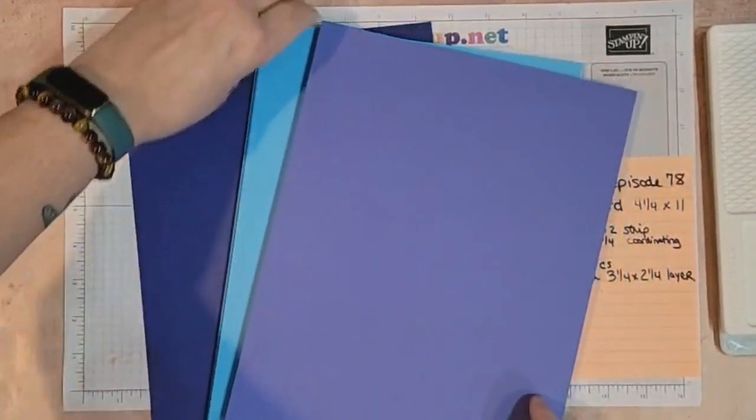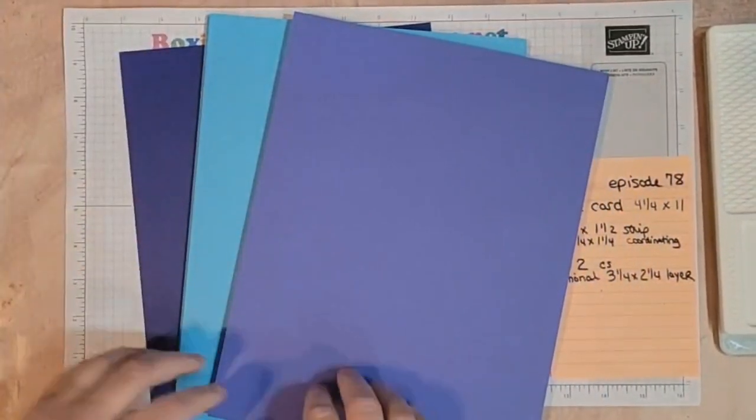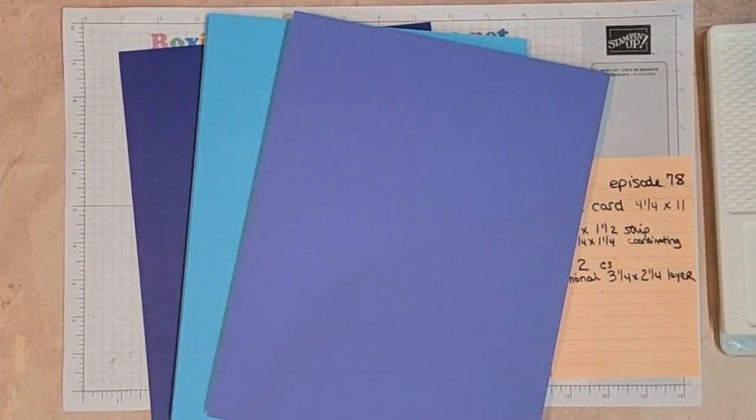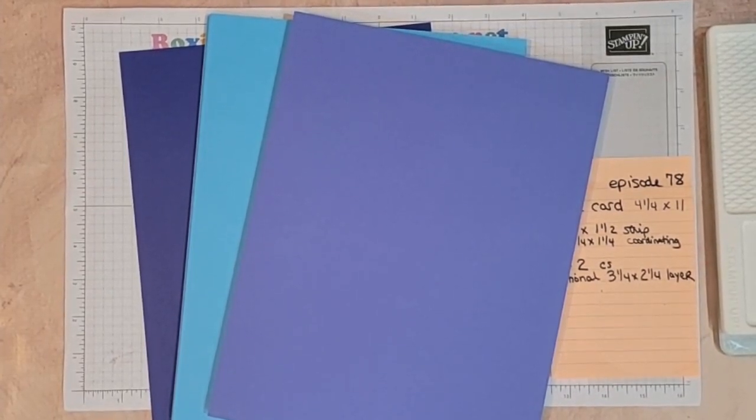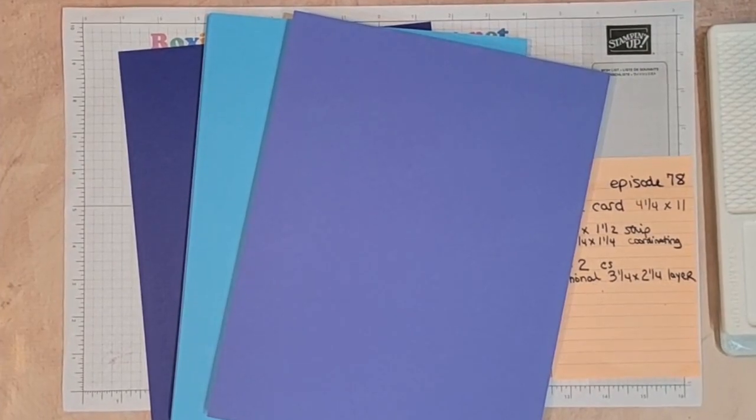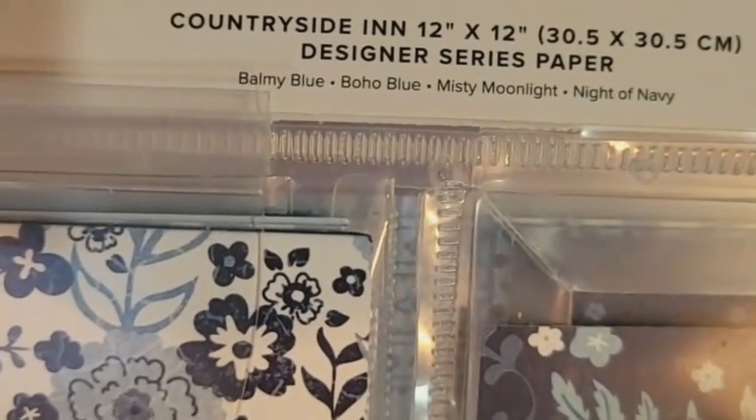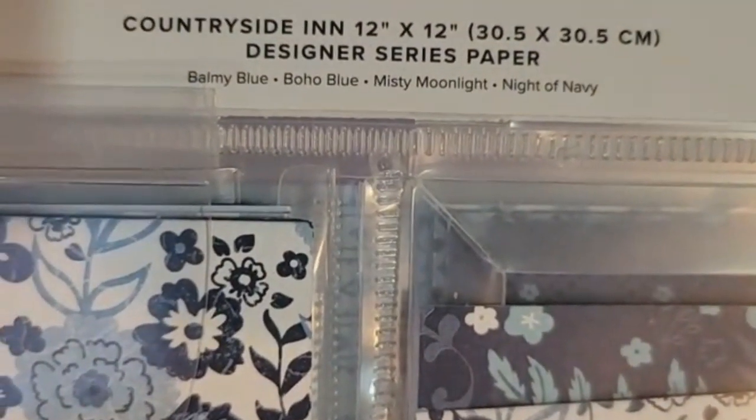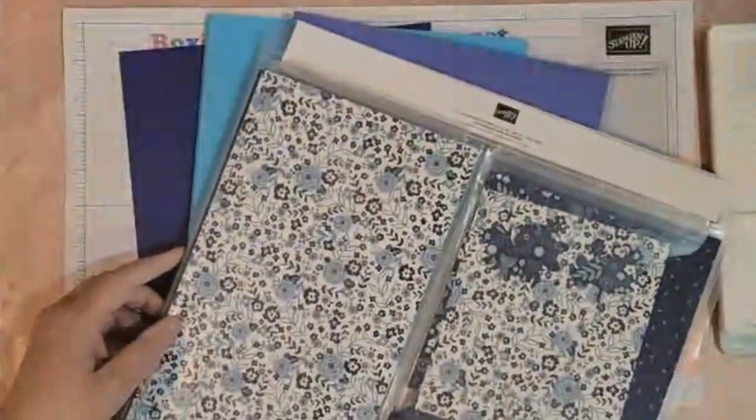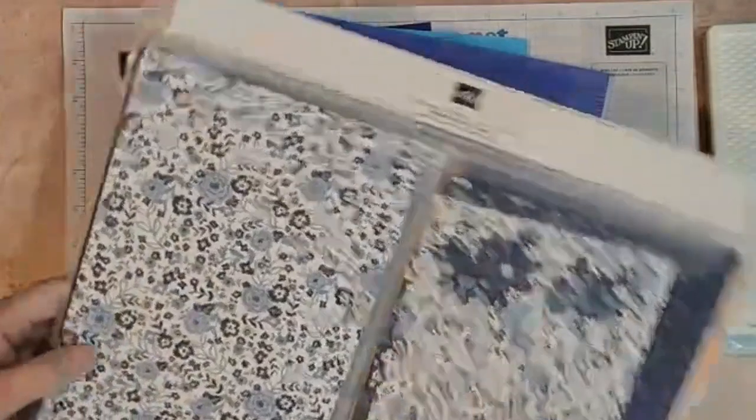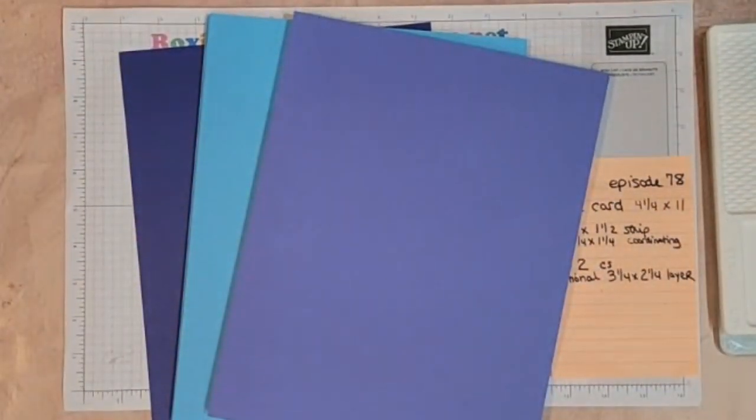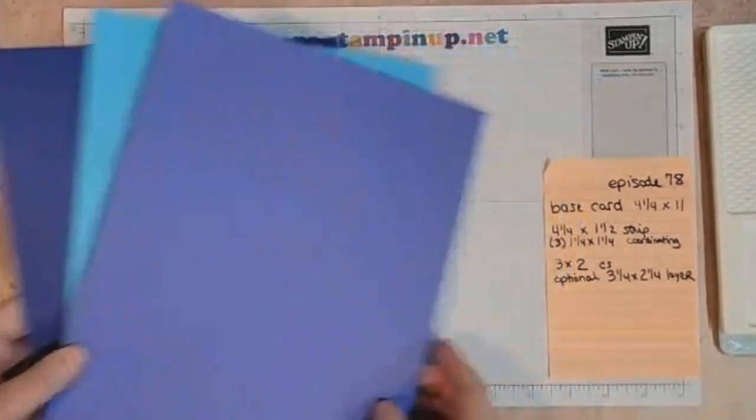And then I think I want to use some sort of designer series paper. I think I'm going to get the countryside because even though the colors, let me show you what's in countryside. See it's not any of these blues but I think they'll still coordinate well because they're almost misses.